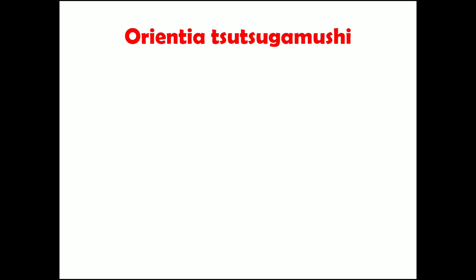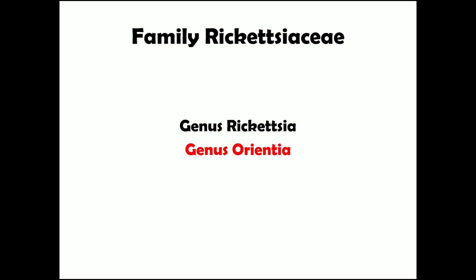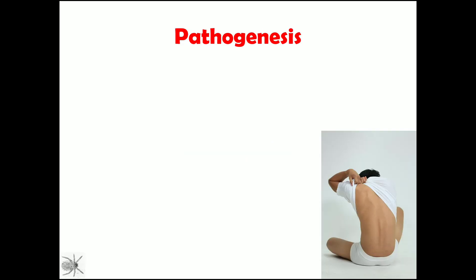Scrub typhus is caused by a bacteria known as Orientia tsutsugamushi. This is transferred by mites, most commonly Leptotrombidium mites. These all come under the family Rickettsiaceae. Under this family there are two main genera: genus Rickettsia and genus Orientia.